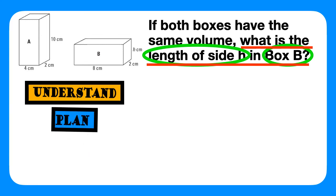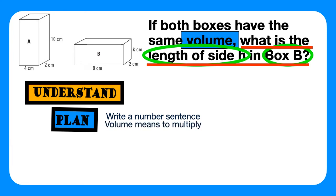we look for a keyword. The keyword in this question is volume. Here, we're going to use the strategy, write a number sentence. Volume lets us know that we must multiply. But we must be careful because this is a multi-step problem. So, in solving, we have to do more than one operation.